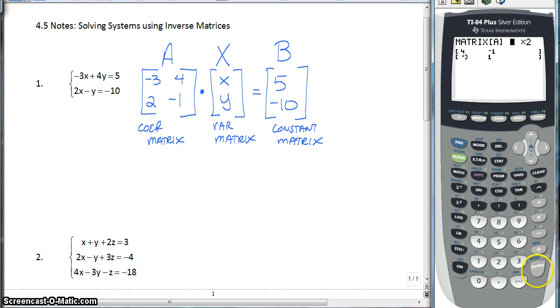And it's a 2 by 2. And we're going to enter negative 3, 4, 2, and negative 1. And then we're going to quit out of here.